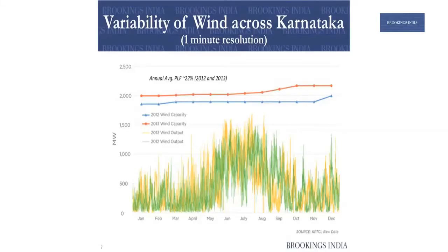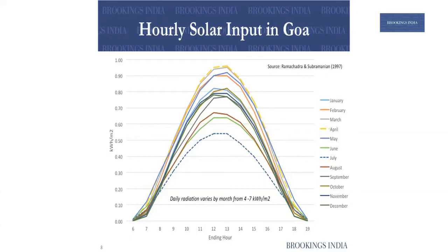This is a very typical load curve from wind — two years of wind data in Karnataka at one-minute resolution. The installed capacity is 2000 megawatts, but wind is very seasonal, occurring in the monsoon season as expected. The average PLF is 22 percent. This shows you what solar looks like — data from a paper on Goa, where hourly between 6am and 7pm you get different outputs. Maximum comes in April, minimum in July, so you get between 4 and 7 kilowatt hours from solar.